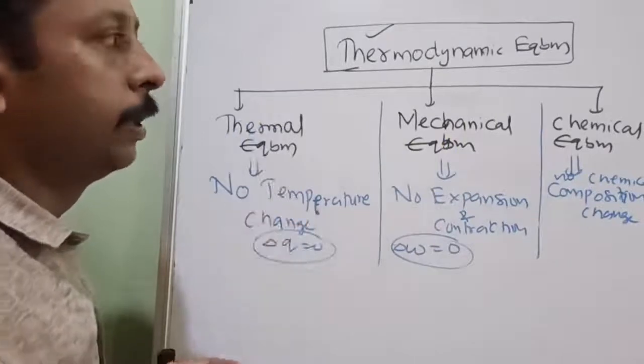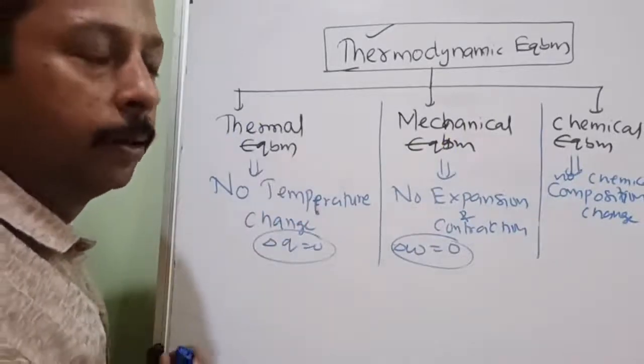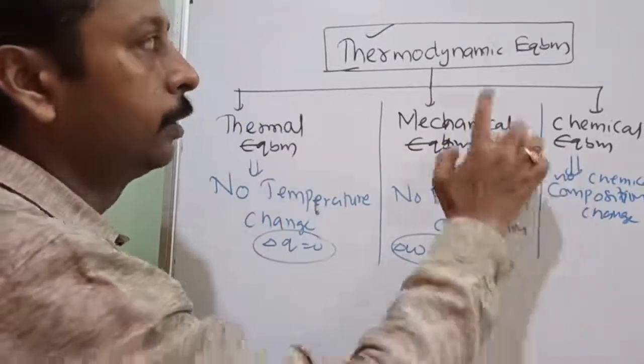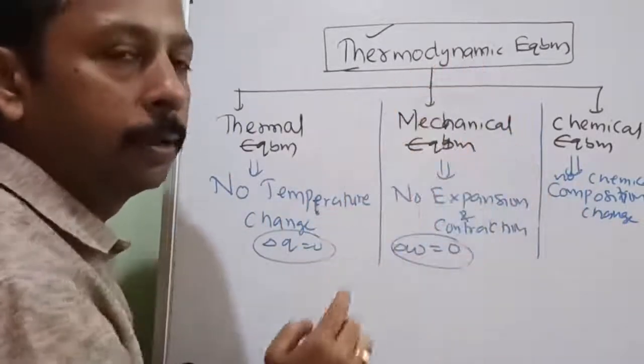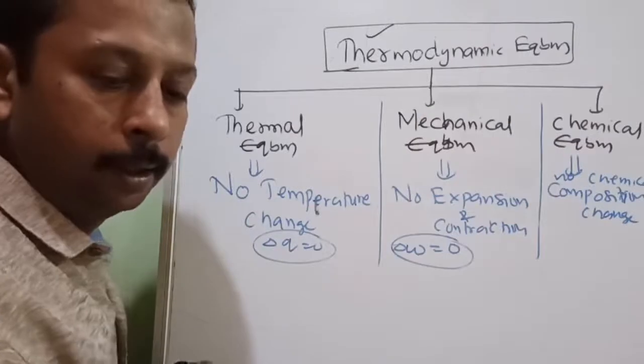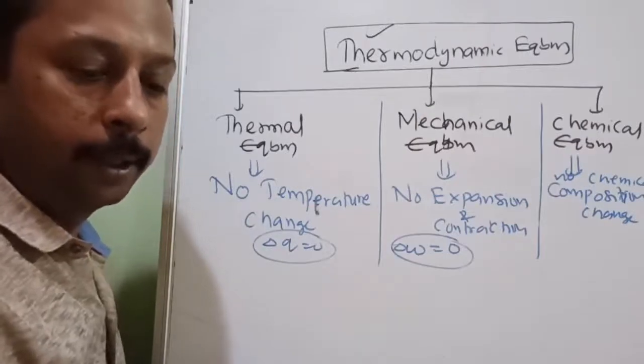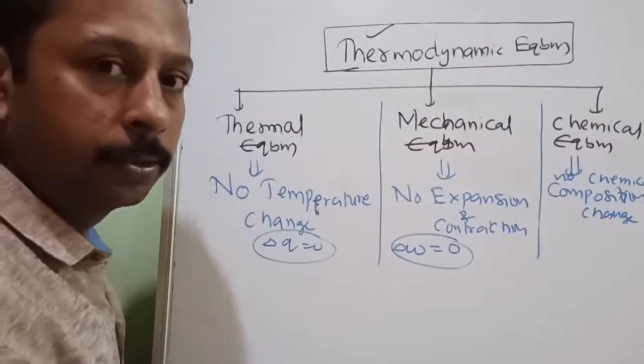So mechanical equilibrium plus chemical equilibrium plus thermal equilibrium — all three coexist — then only it is thermodynamic equilibrium. Is it understood?